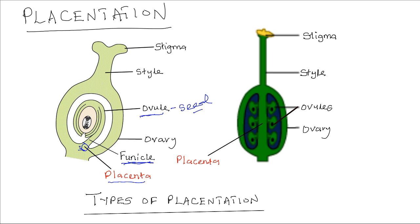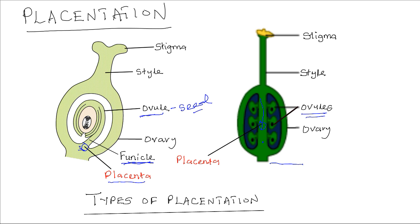Placentation refers to the arrangement of the ovules in an ovary of a flower or the arrangement of seeds in a fruit. There are different types of placentation in plants. In this ovary we have several ovules and they are all attached to the placenta. The way the ovules or seeds are arranged and attached to the placenta is what is referred to as placentation.